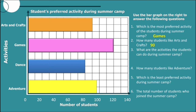Number three: what are the activities the students can do during the summer camp? We just state all the categories in the graph, which are arts and crafts, games, dance, and adventure. Number four: how many students like adventure? We already know the value between 80 and 100 is 90. Now, adventure is in the middle of 90 and 100, so we get the midpoint by adding 90 plus 100 and dividing by 2, giving us the answer 95.